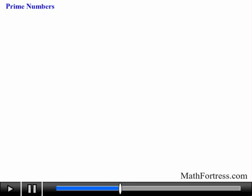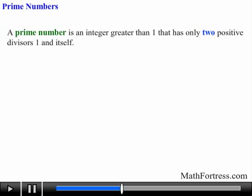Now let's move along and talk about prime numbers. A prime number is an integer greater than 1 that has only 2 positive divisors: 1 and itself.